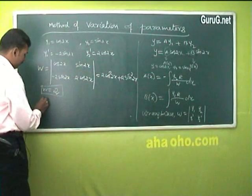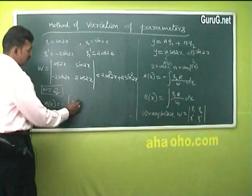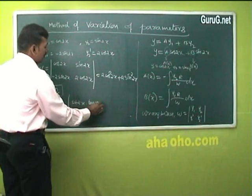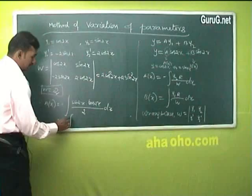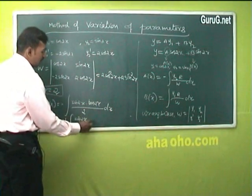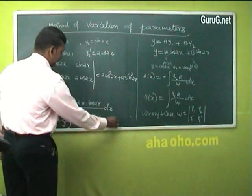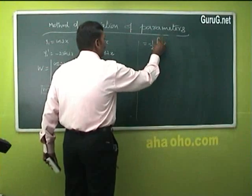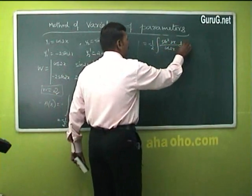Now a(x) = −∫[y₂·R / W] dx = −∫[sin(2x)·tan(2x) / 2] dx = −(1/2)∫sin(2x)·tan(2x) dx. Replacing tan(2x) with sin(2x)/cos(2x), this becomes −(1/2)∫sin²(2x)/cos(2x) dx.